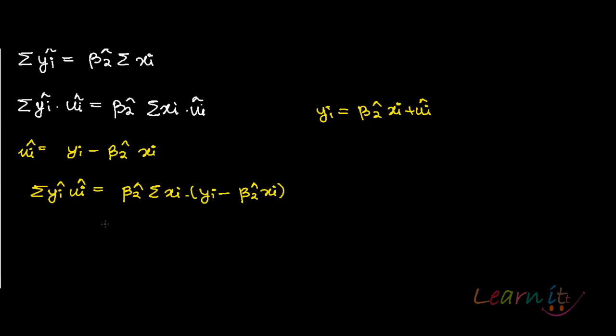This gives beta 2 hat summation xi yi minus beta 2 hat square summation xi square.